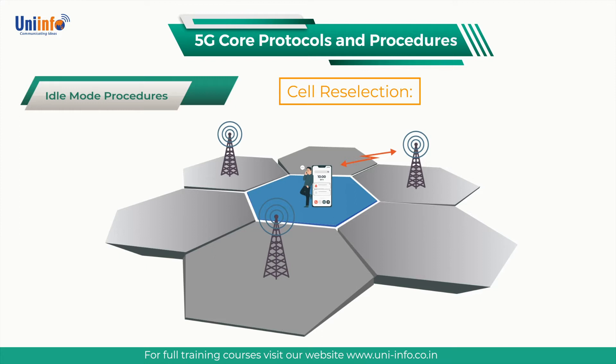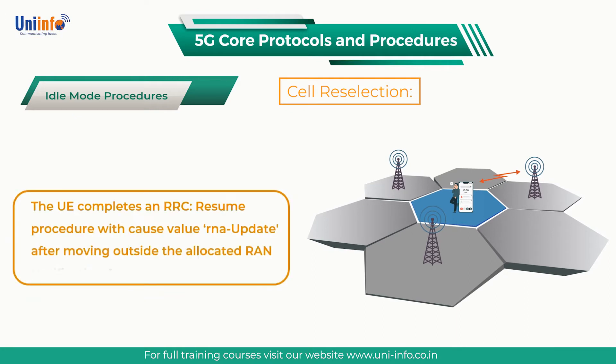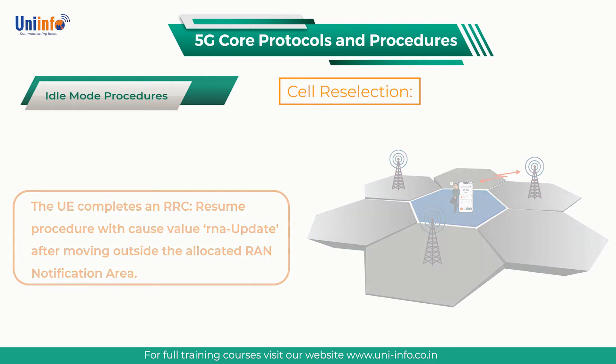The UE is responsible for acquiring SIB1 after each cell reselection to determine whether or not the UE remains located within the allocated RAN notification area. The UE completes an RRC resume procedure with cause-value RNA update after moving outside the allocated RAN notification area.